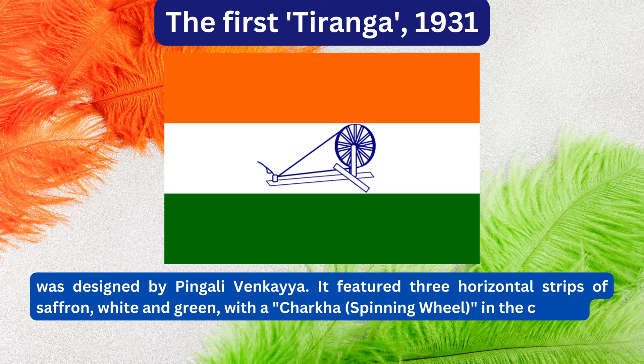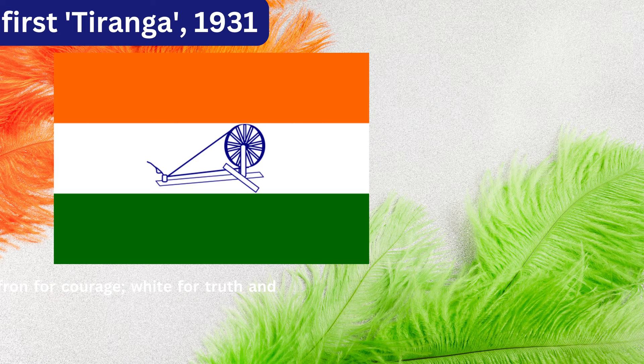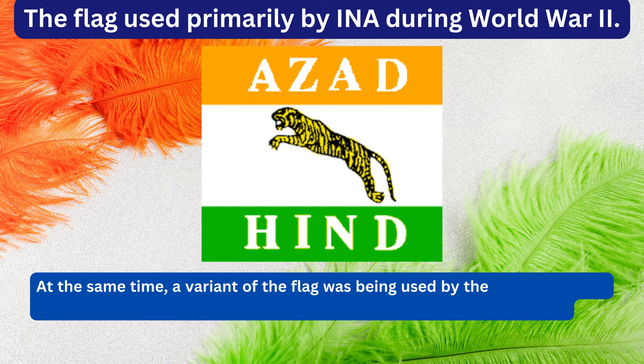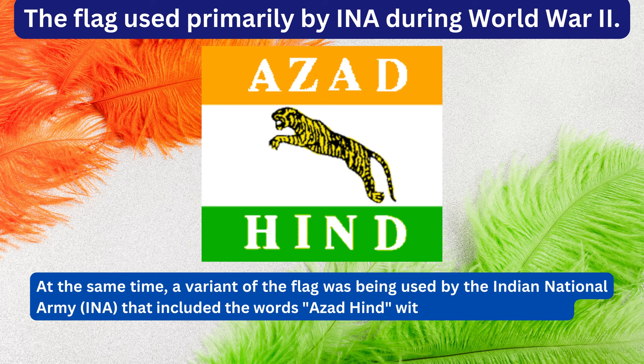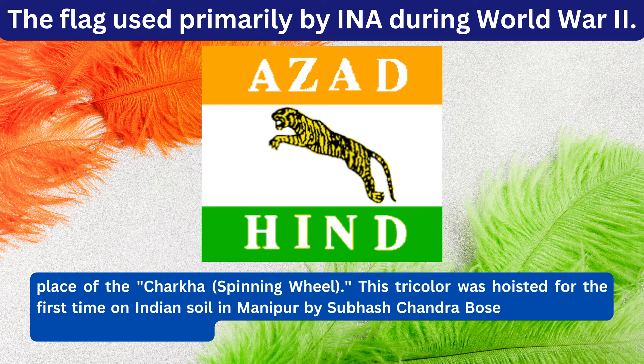The colours were interpreted thus: saffron for courage, white for truth and peace, green for faith and prosperity. At the same time, a variant of the flag was being used by the Indian National Army (INA) that included the words "Azad Hind" with a springing tiger in the place of the spinning wheel. This tricolour was hoisted for the first time on Indian soil in Manipur by Subhash Chandra Bose, though it was not the official version.